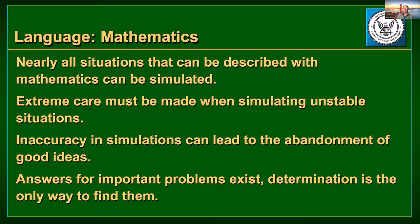Inaccuracy in simulations can lead to the abandonment of good ideas. He talks about a colleague who threw out an idea because of inaccuracies at the beginning — another colleague picked it up and ended up winning the Nobel Prize for it. Answers for important problems exist, and determination is the only way to find them. That key point runs throughout all of Hamming's work: you have to seek the problem, tackle the problem, and always look for the next issue to solve.